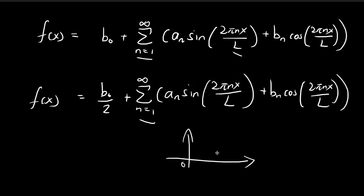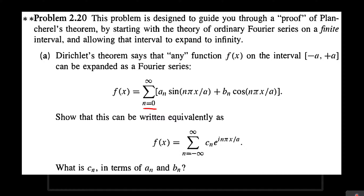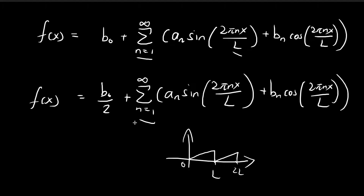For Fourier series like this, it could be an expression for a periodic function that repeats itself after every interval of l. So your function might look something like this, and then it keeps repeating itself at 3l, 4l, and all the way to infinity. In this scenario, the length of the interval is equal to 2a. In the problem that Griffiths gives us, it corresponds to the case where l is equal to 2a.